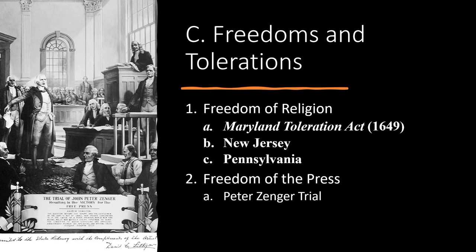The freedom of the press came about in 1734. Articles that criticized the governor appeared in the New York Weekly Journal, a newspaper printed by John Peter Zenger. The governor had Zenger imprisoned for libel — printing falsehoods intended to damage a person's reputation. When Zenger's case came to trial, the jury found Zenger not guilty, because what he was writing about was the truth.